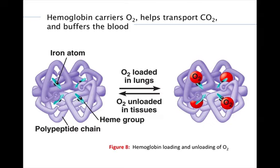Almost all vertebrates and many invertebrates use hemoglobin to transport oxygen. A hemoglobin molecule consists of four polypeptide chains of two different types. Attached to each polypeptide is a chemical group called a heme, at the center of which is an iron atom. Each iron atom can carry one oxygen molecule; thus, every hemoglobin molecule can carry up to four oxygen molecules. Hemoglobin loads up with oxygen in the lungs and transports it to the body tissues, where it unloads some or all of its cargo depending on the oxygen needs of the cells.